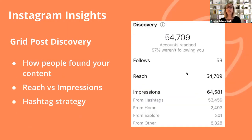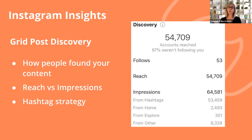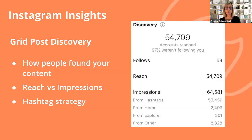If we scroll down a little bit further in our individual post insights, we can look at the Discovery section — this is how people found your content. We've got follows, reach, and impressions. Don't be too obsessed about number of followers. A much more important metric is your engagement metric — how engaged are your followers versus how many followers you have. Some of your followers might not be engaged; they could be bots. It's much better to have 3,000 engaged followers versus 10,000 disengaged. So focus on engagement versus followers.